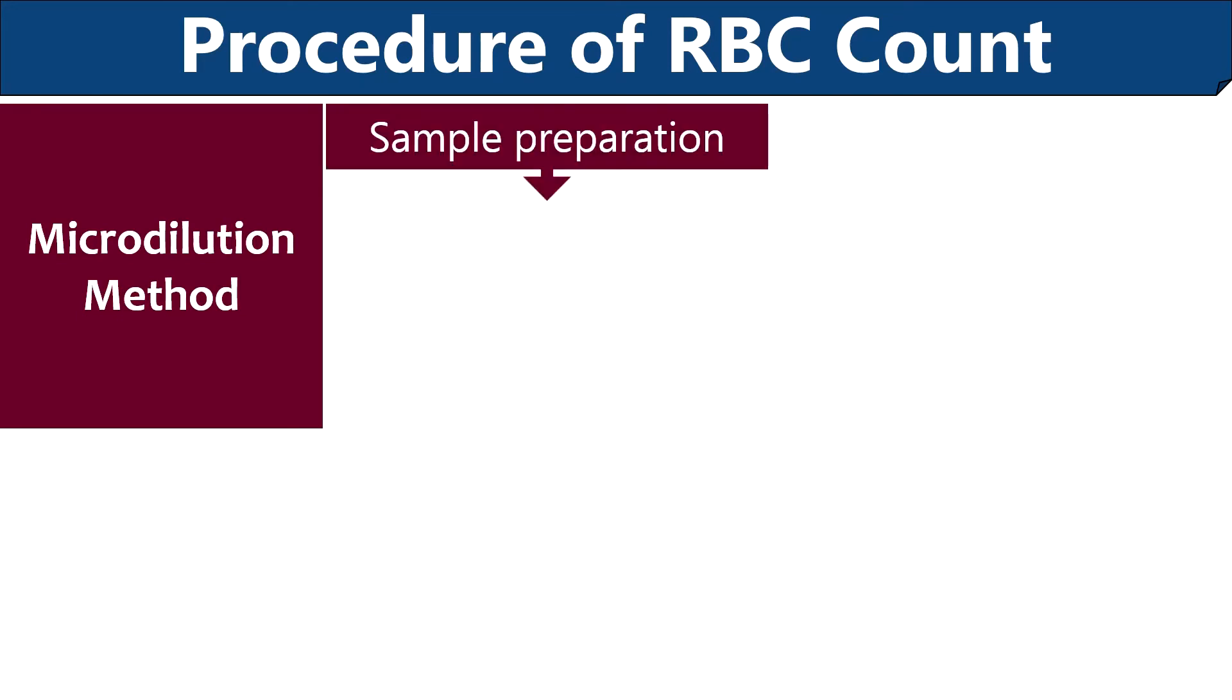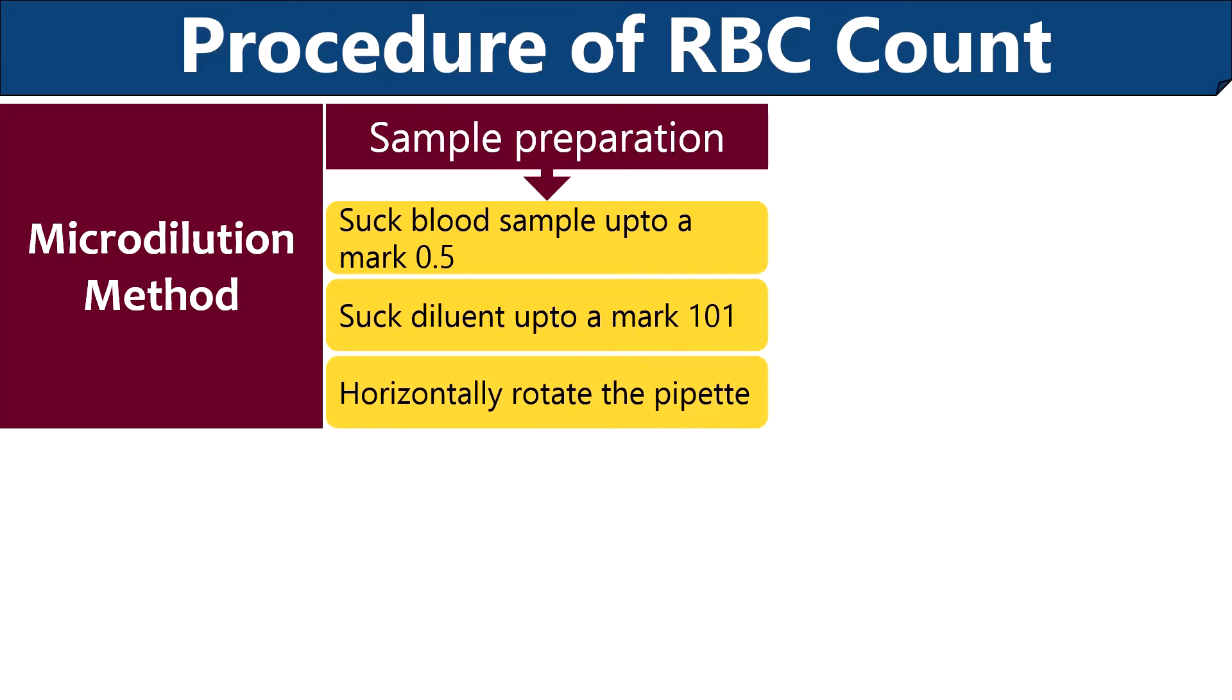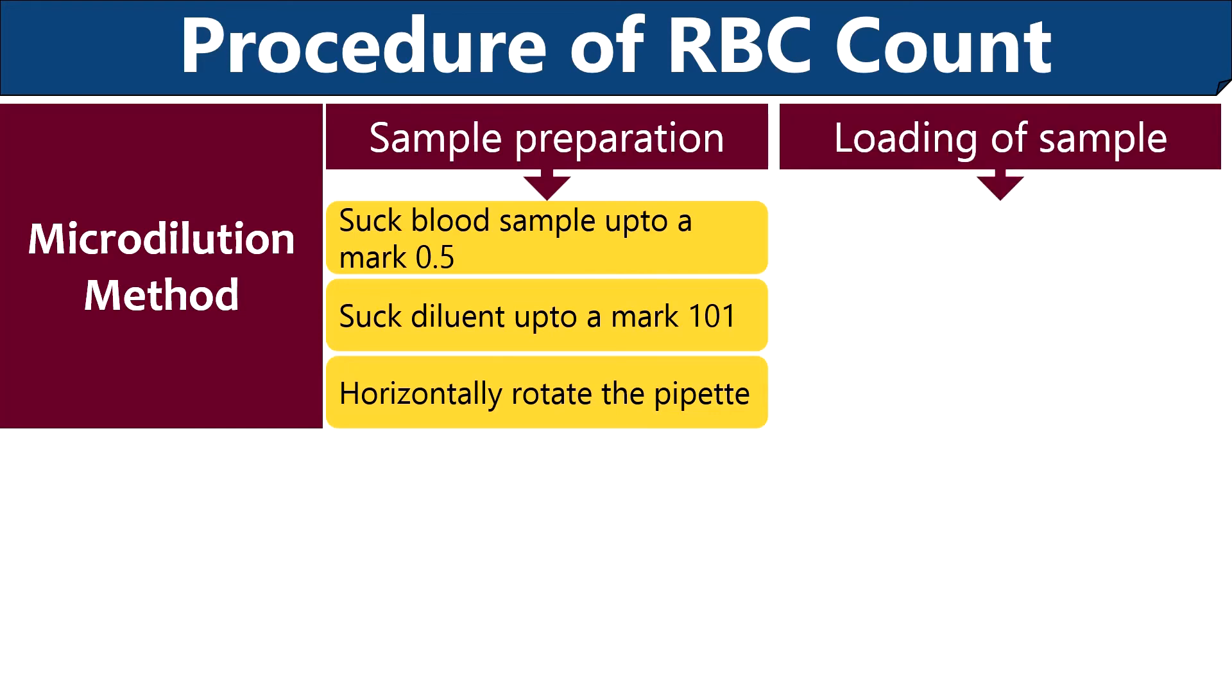First you need to prepare the sample for which you need to suck the blood up to a mark 0.5 of the RBC pipette. After that, suck the RBC diluting fluid up to a mark 101. Then horizontally rotate the RBC pipette to mix the blood sample and RBC diluent.